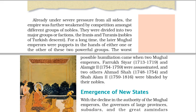Already under severe pressure from all sides, the empire was further weakened by competition amongst different groups of nobles. They were divided into two major factions — the Iranis and Turanis, nobles of Turkish descent. For a long time, the later Mughal emperors were puppets in the hands of either one or the other of these two powerful groups. The worst possible humiliation came when two Mughal emperors, Farukh Siyar (1713–1719) and Alamgir II (1754–1759), were assassinated, and two others, Ahmad Shah (1748–1754) and Shah Alam II (1759–1816), were blinded by their nobles.